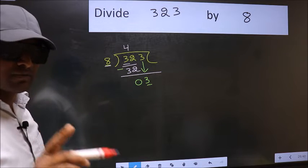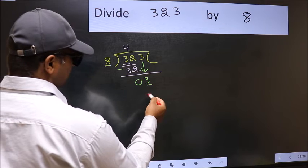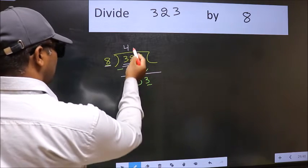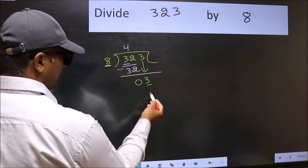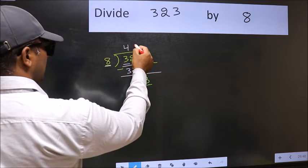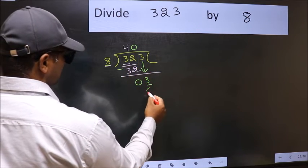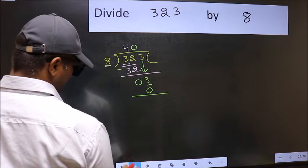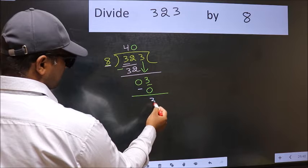Instead, what you should think of doing is which number should be right here. If I take 1, we will get 8, but 8 is larger than 3. So what we should do is we should take 0. So 8 into 0, 0. Now we should subtract. 3 minus 0, 3.